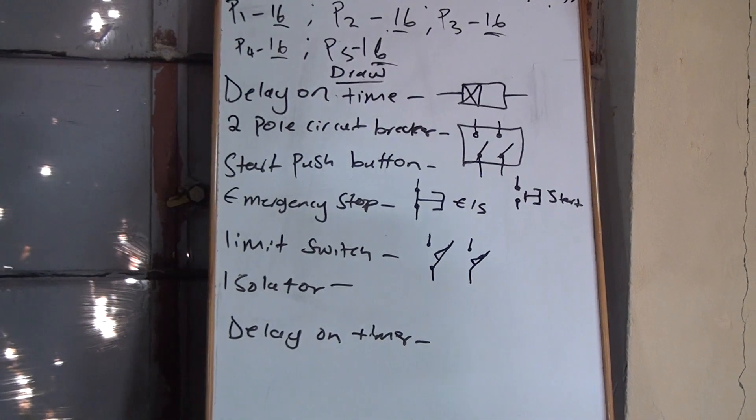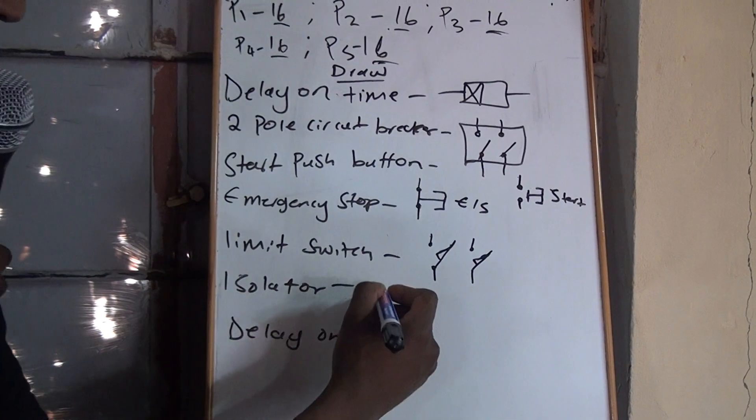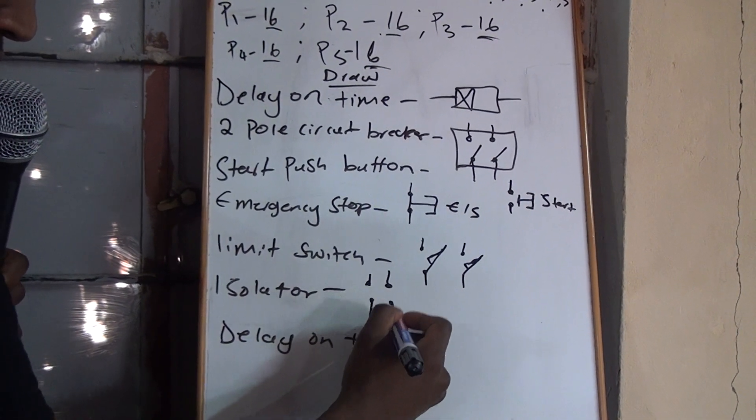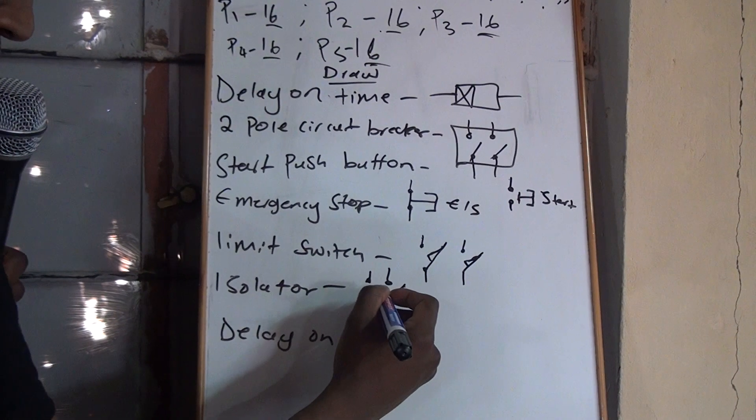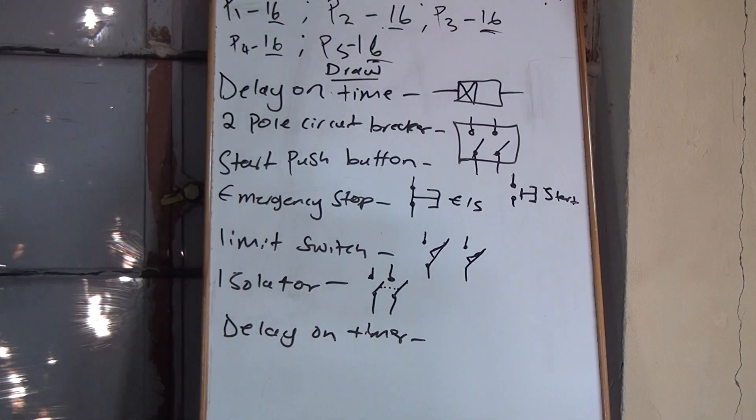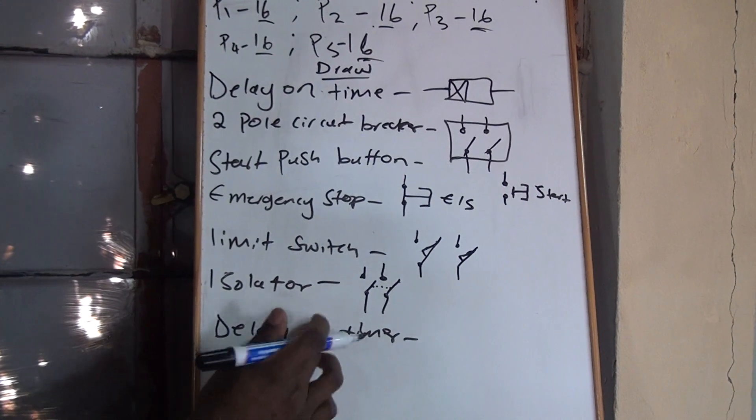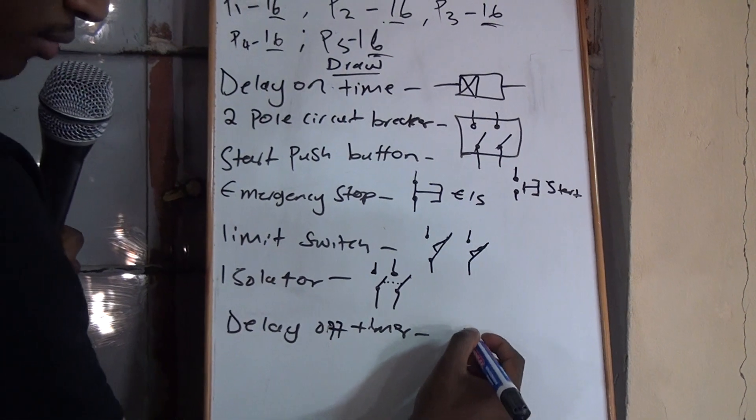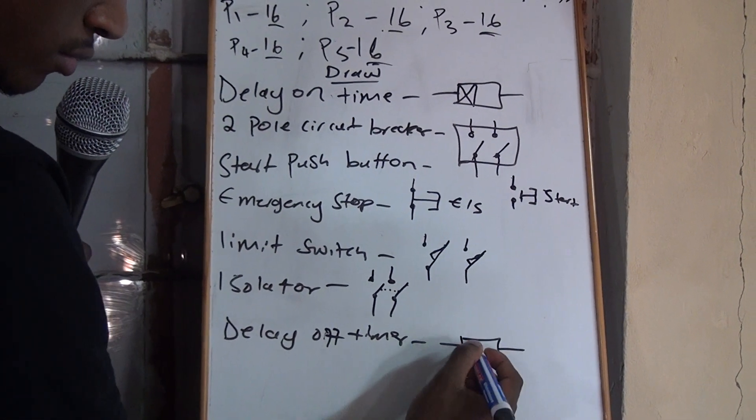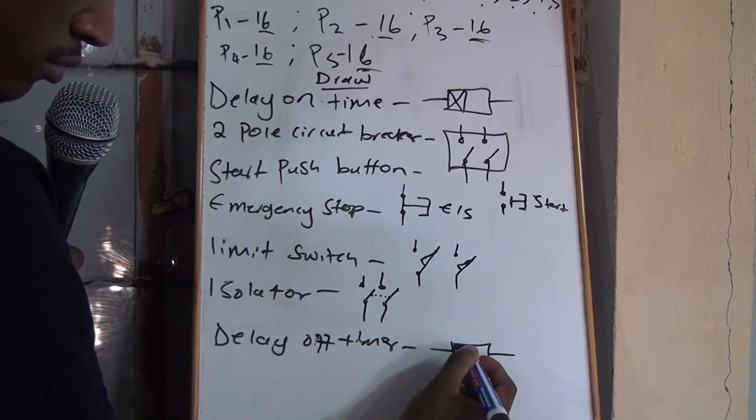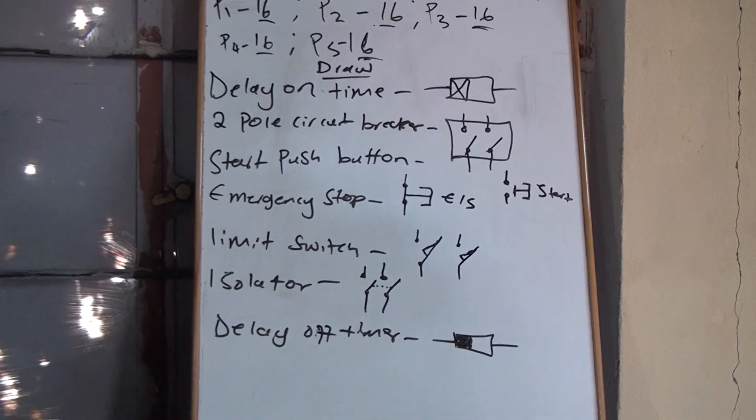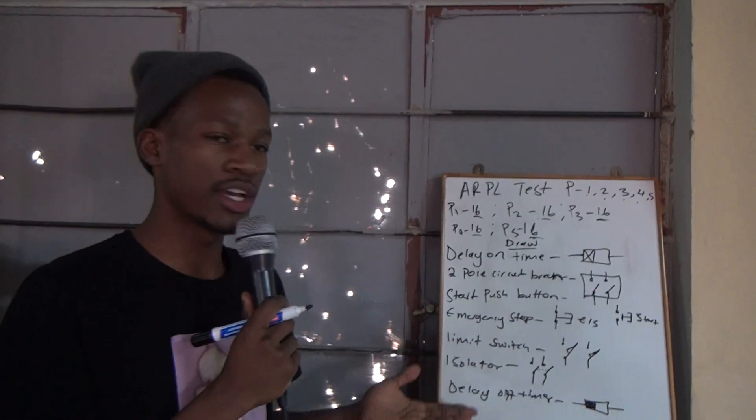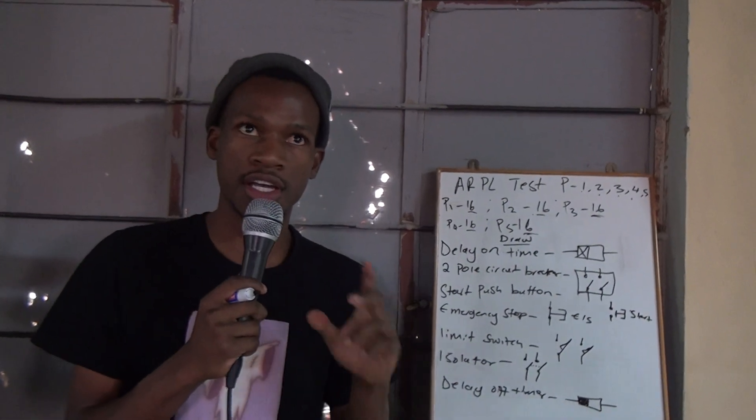That's your limit switch. And then you will be asked to draw your isolator. And then that's your delay off timer. Yeah, not delay off timer. You will be asked to draw your alarm timer.